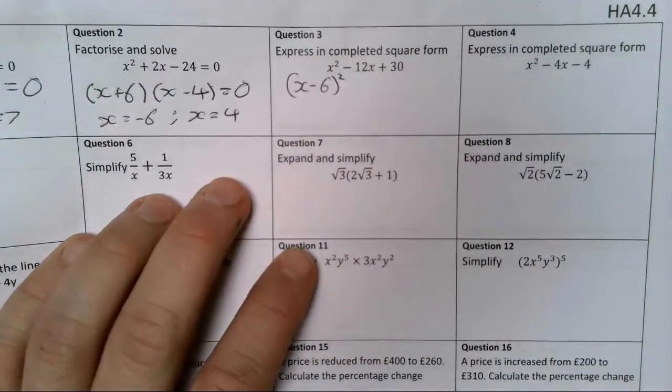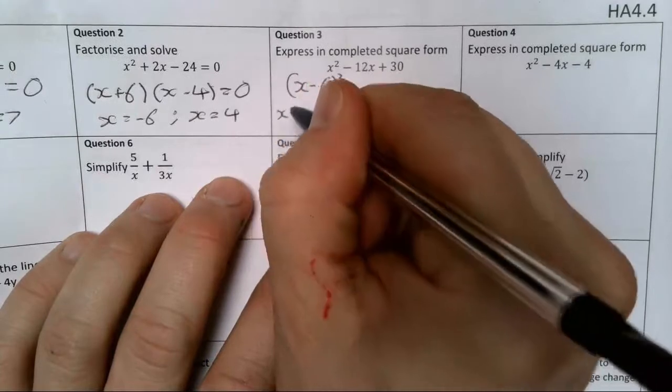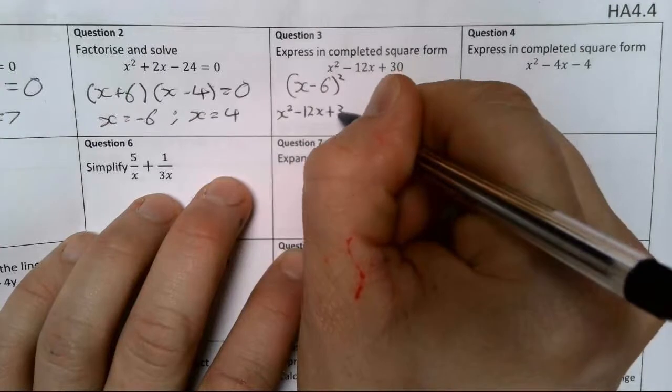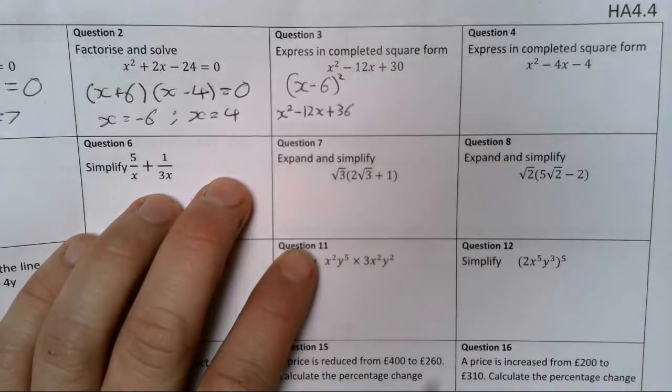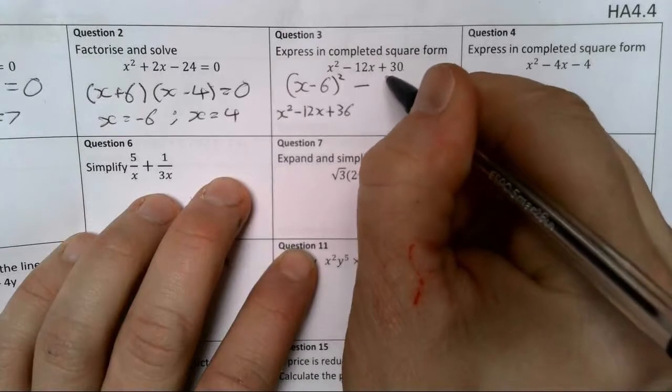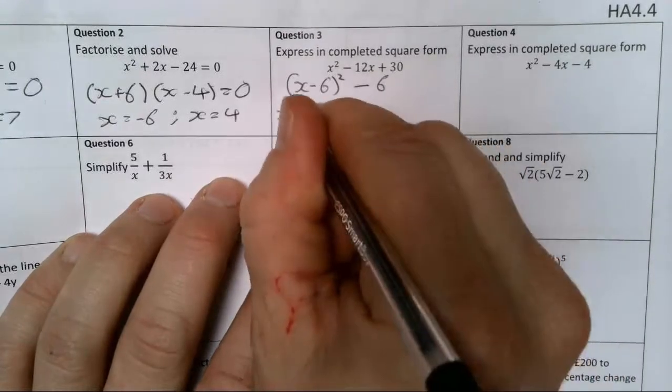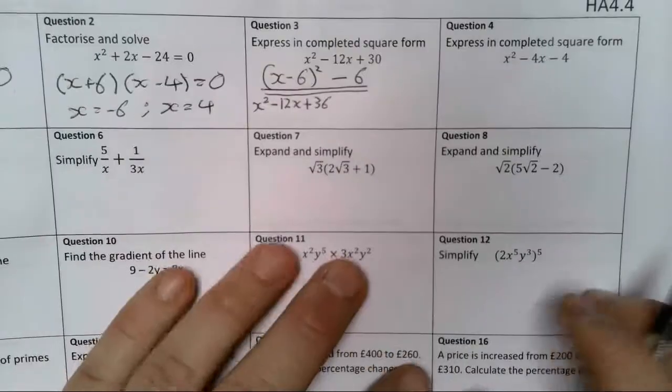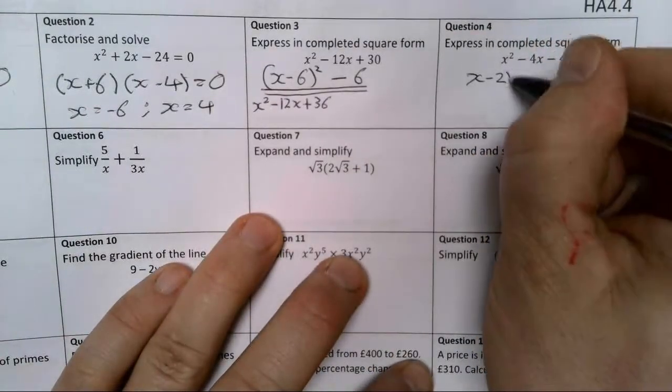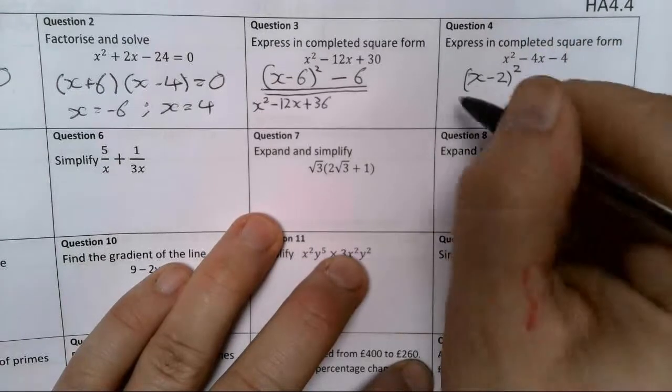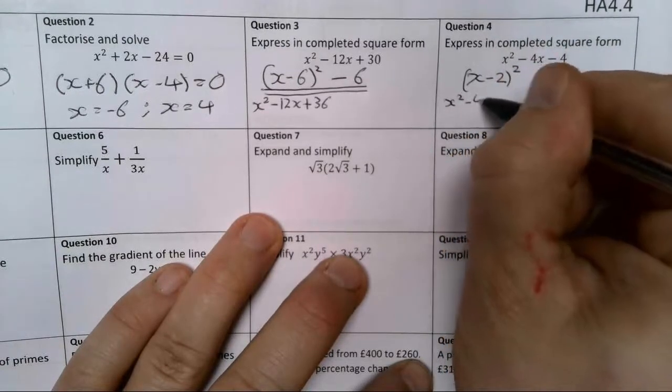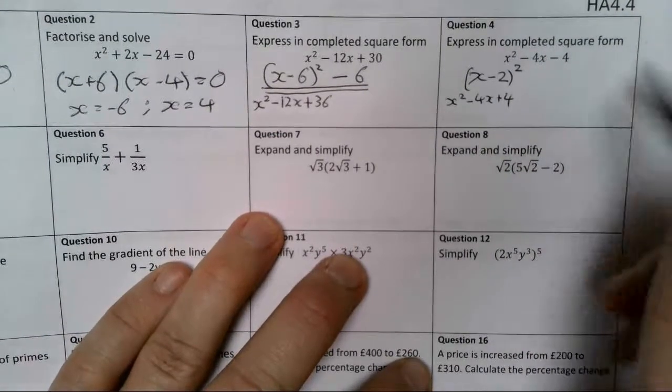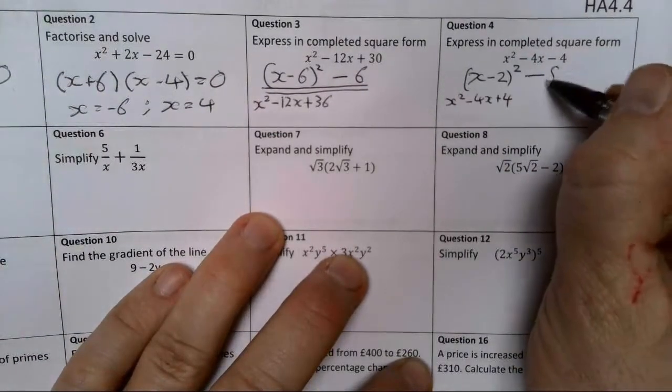This is going to give me x squared. When I expand it out, this gives me x squared minus 12x plus 36, which is 6 too high. So I've got to take away 6 in order to make it match. And the same idea here, this is going to be x minus 2 squared, which gives me x squared minus 4x plus 4, which is 8 too high. To get from plus 4 to minus 4, I need to take away 8.